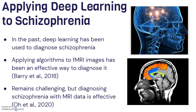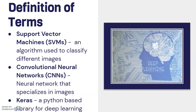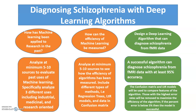My research topic was applying deep learning models to schizophrenia detection. I found it had been explored before, as many researchers had tried to detect schizophrenia more effectively than traditional blood tests and physical examinations, which have not worked as well. I used support vector machines to classify images and a CNN to make predictions, along with Keras to implement both. My two core sub-problems were how machine learning had been applied in past research, and how the efficiency of machine learning could be measured.